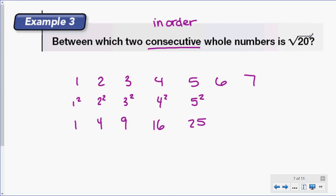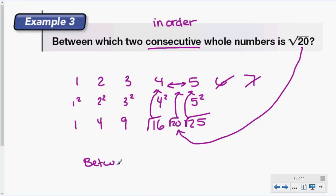I'm going to cross these off because they're too high. The square root of 20 would fall in here because 20 is between 16 and 25. So if the square root of 16 is 4 and the square root of 25 is 5, the square root of 20 has to be somewhere between 4 and 5. That's how we would figure it out. So for our answer: between 4 and 5.